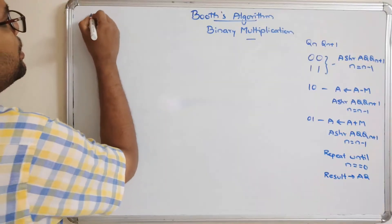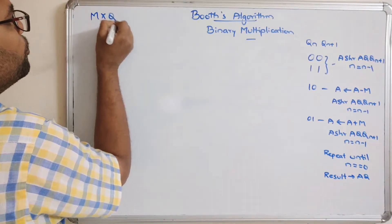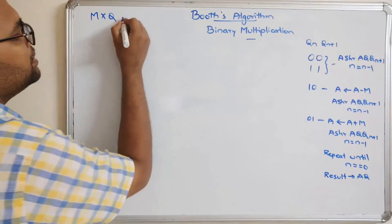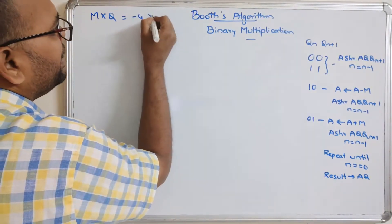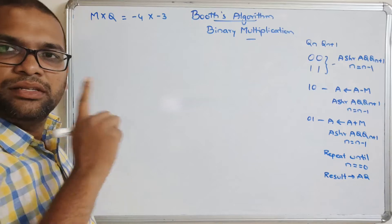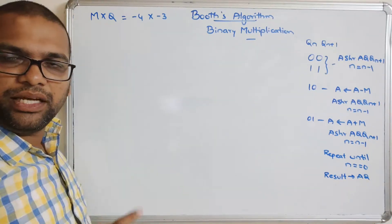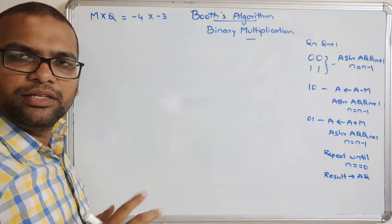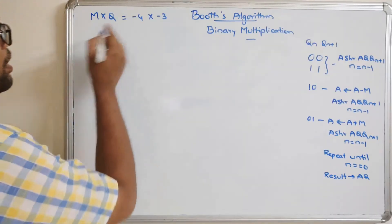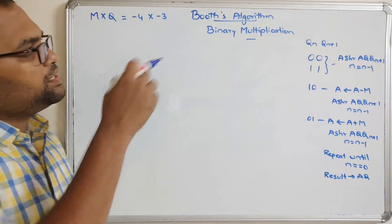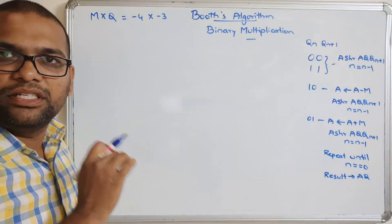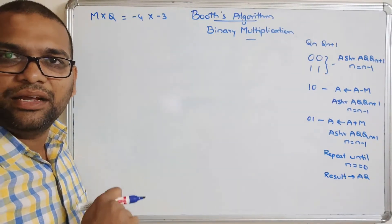Now consider M × Q, which is the multiplicand times the multiplier, equal to minus four times minus three. We need to perform this multiplication on minus four and minus three. I am taking very small numbers — you can take any number. As we discussed, this is signed multiplication, so signed numbers means we need to represent them including the sign.